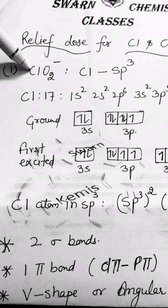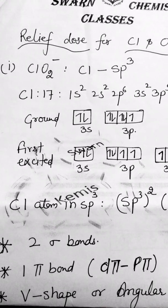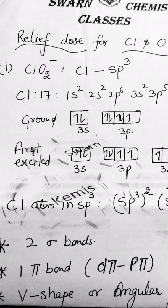Now let's talk about the molecule of ClO2 negative. Chlorine in this molecule is sp3 hybridized.